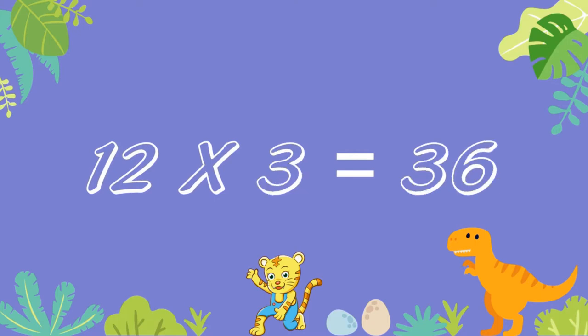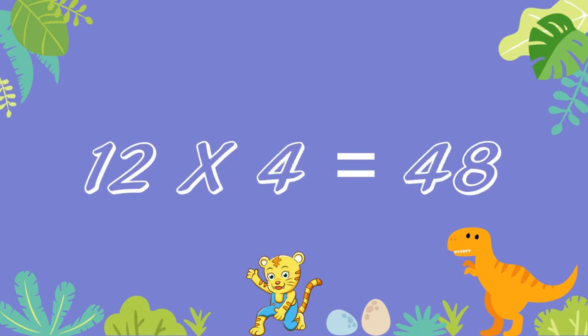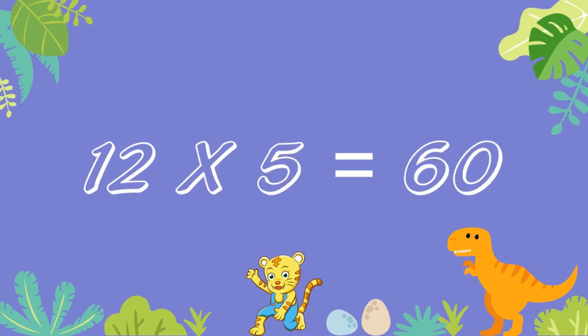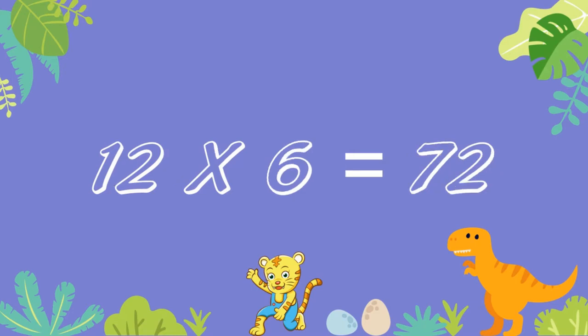12 threes are 36. 12 fours are 48. 12 fives are 60. 12 sixes are 72.